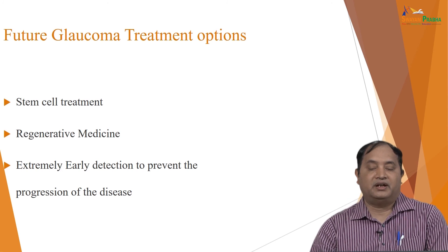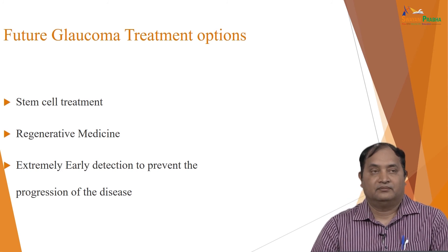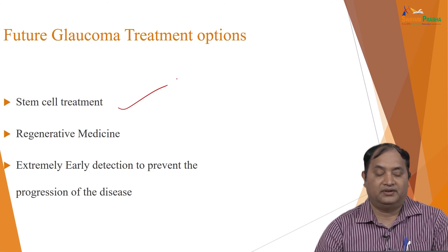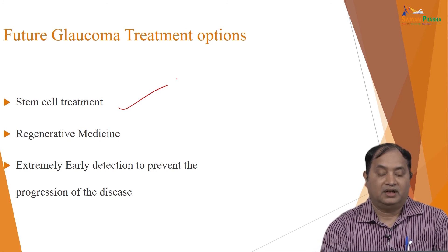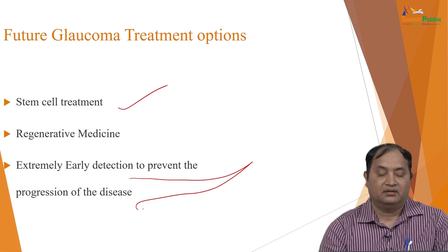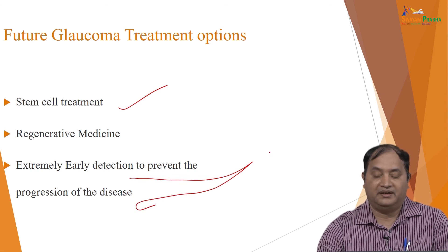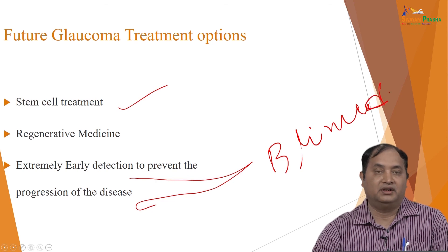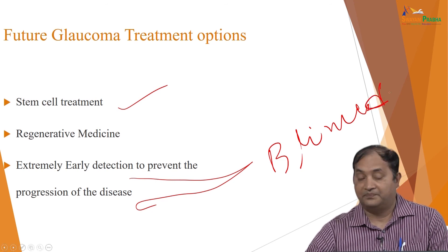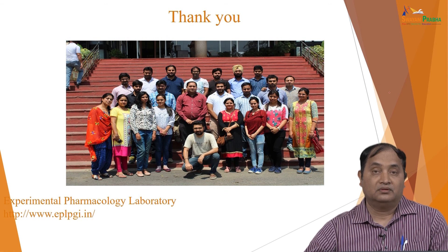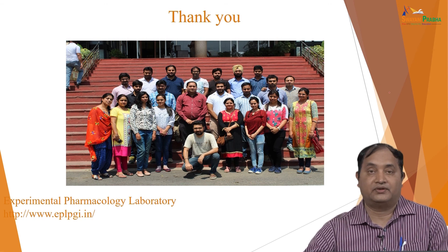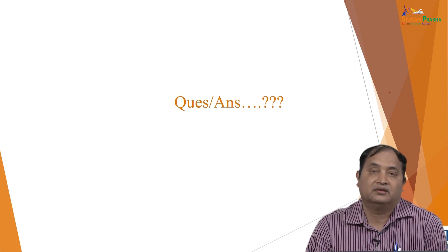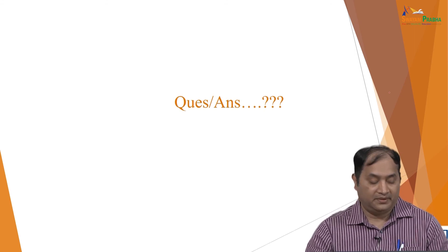For future treatment options, people are using stem cell treatment and regenerative medicine. People are also trying to achieve early detection to prevent disease progression to blindness — this is why awareness campaigns are conducted almost every year. Early treatment is very much needed in the treatment of glaucoma. Thank you very much.